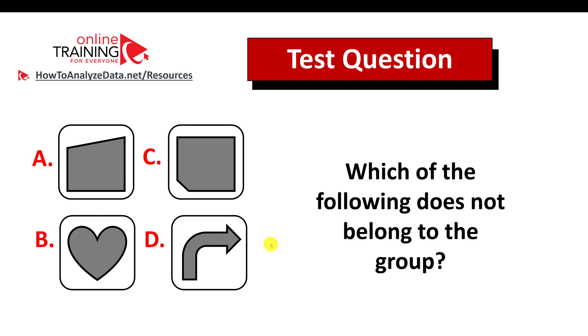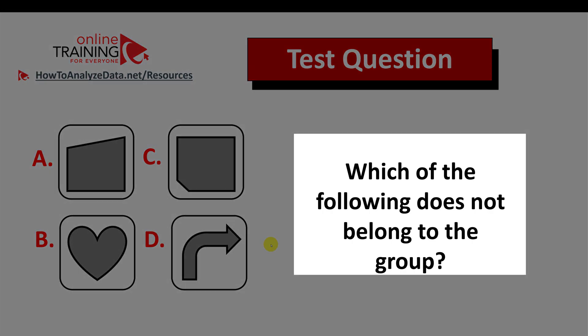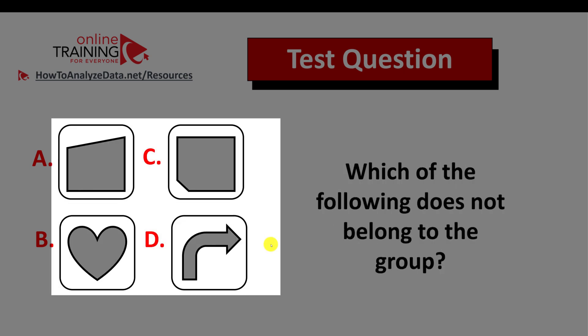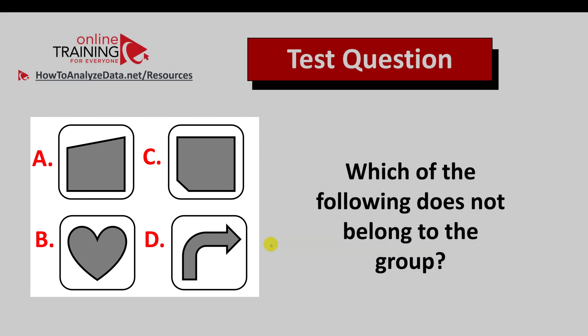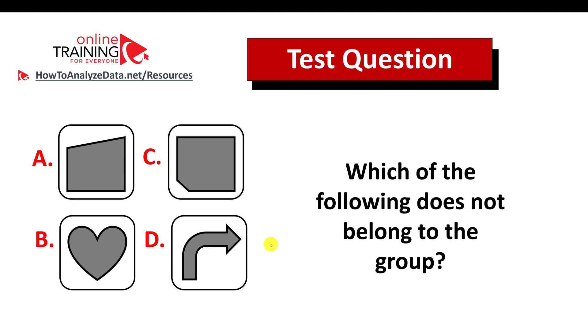Here is the tricky question we frequently see on the test: which of the following does not belong to the group? You are presented with four different shapes representing four choices: A, B, C, and D. Please take a look carefully — maybe give yourself 10 to 15 seconds, possibly pausing this video to see if you can come up with the answer on your own.